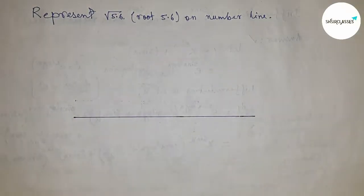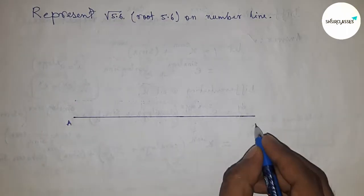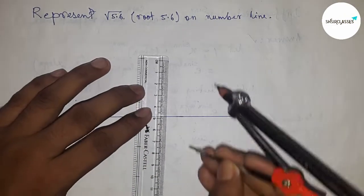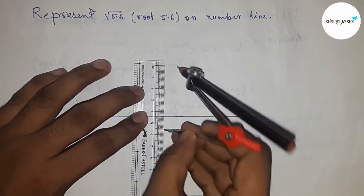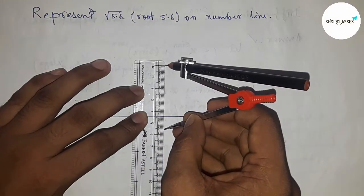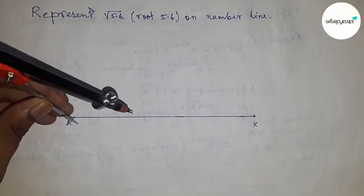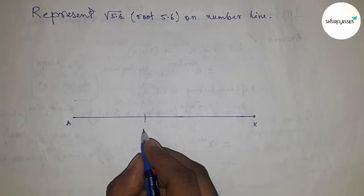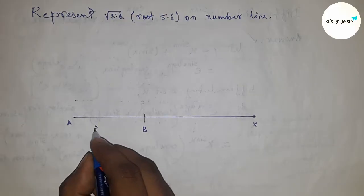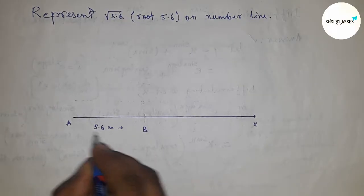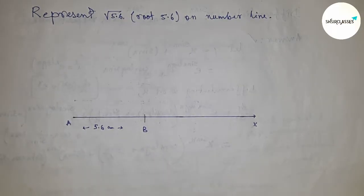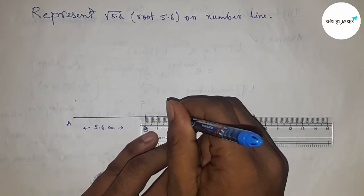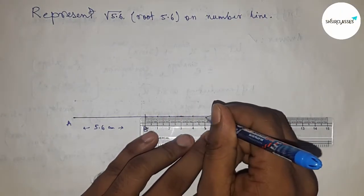First of all, draw a line of any length — this is the AX line. Next, take a length of 5.6 centimeters by compass, put the compass on point A, and cut the line at point B. This is the 5.6 centimeter segment.